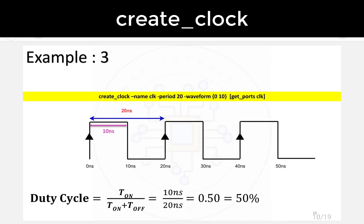Example 3: Time period is 20 ns, T_on = 10 ns, T_off = 10 ns. The constraint is: create_clock -name clock -period 20 -waveform {0 10} [get_ports clock]. Duty cycle = 10/20 = 50%.